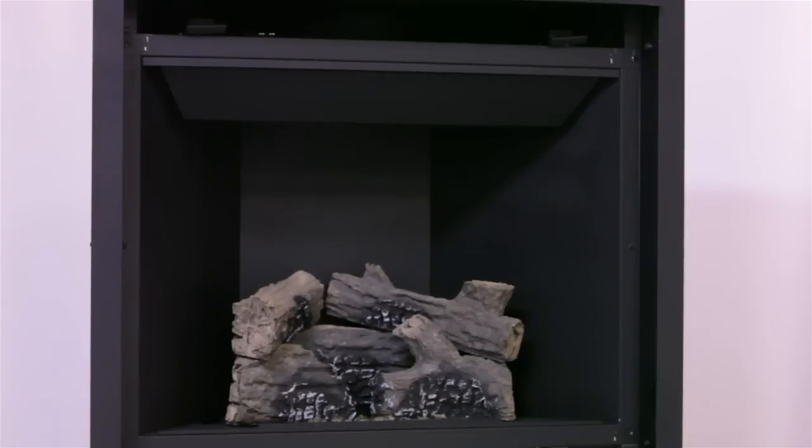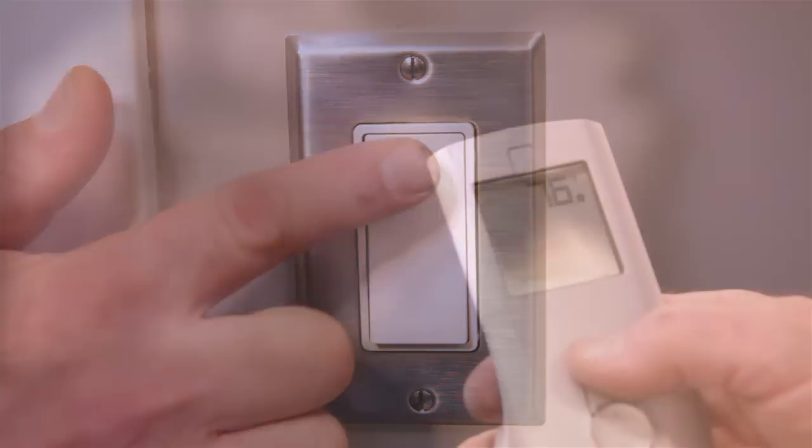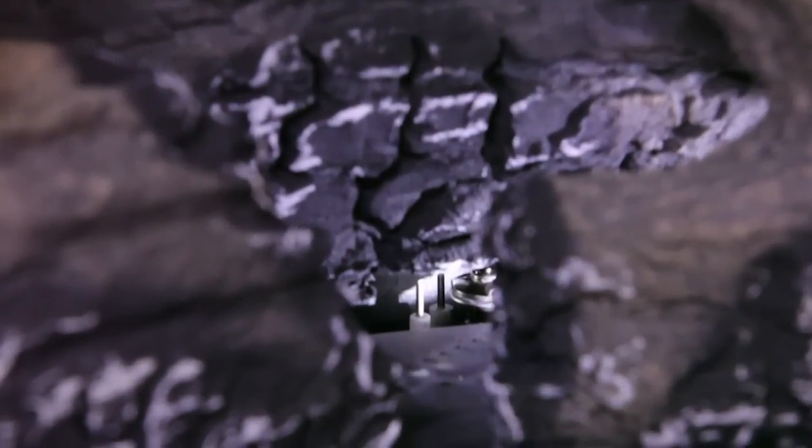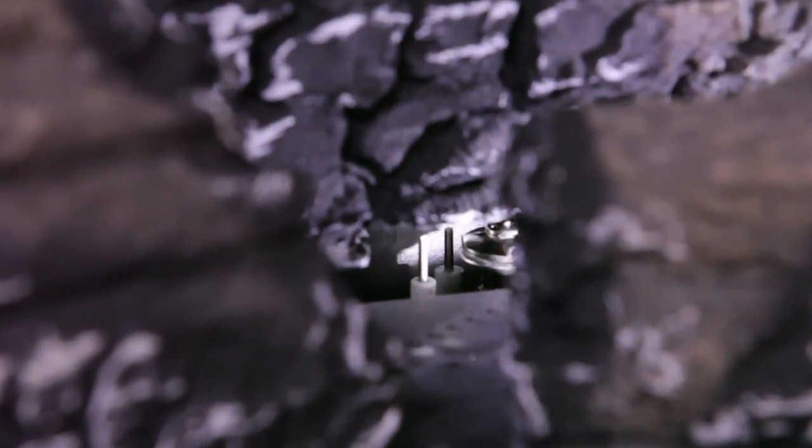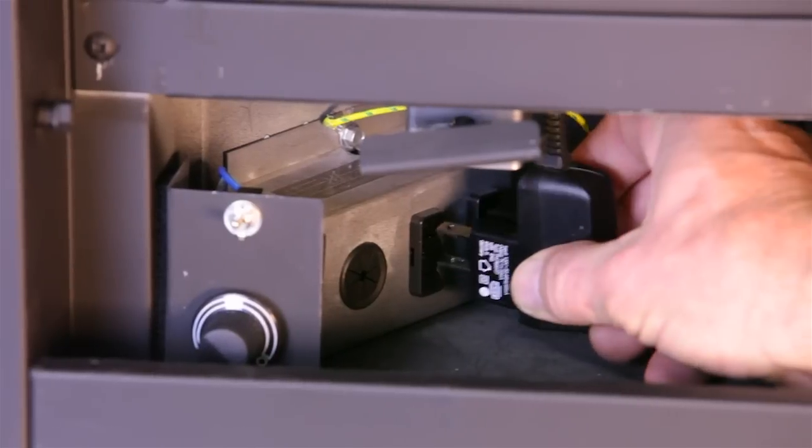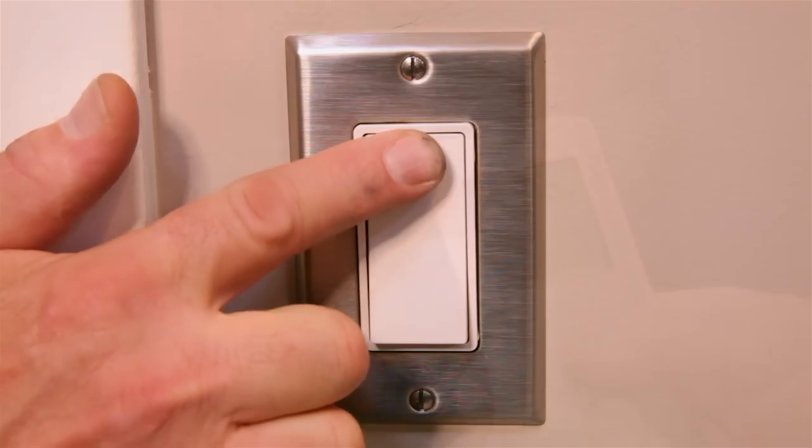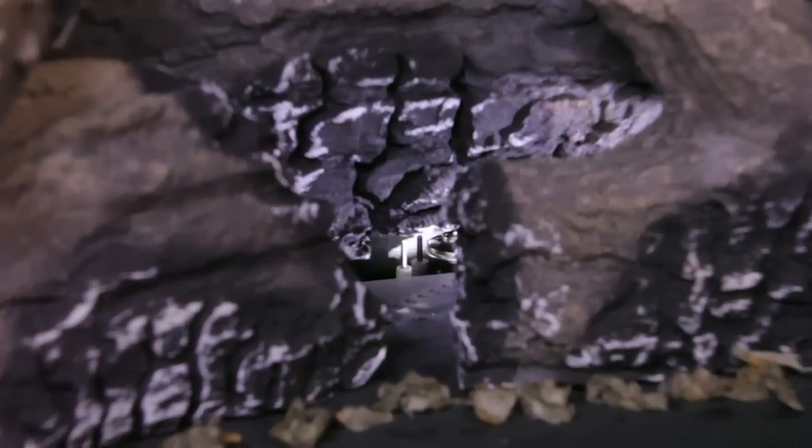When you first turn on your fireplace, initiate a call for heat by turning on a wall switch or using your optional remote control. If you don't see a spark at the pilot hood, then check to see if there is electricity to the fireplace. Plug in the transformer—it may be concealed—and try the switch or remote again.